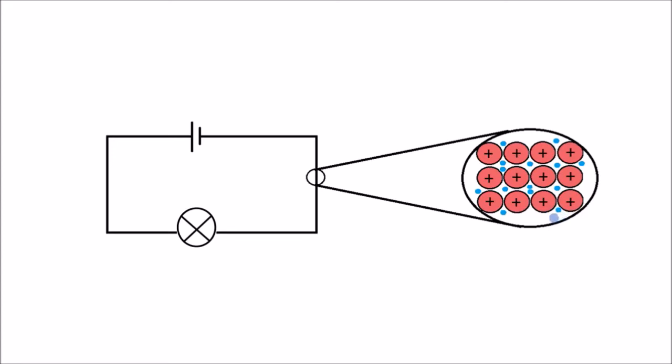So when the wire is connected to a battery like here, the electrons will all flow in a certain direction, in the same direction. And they'll flow from negative to positive, so they'll go this way around the wire.